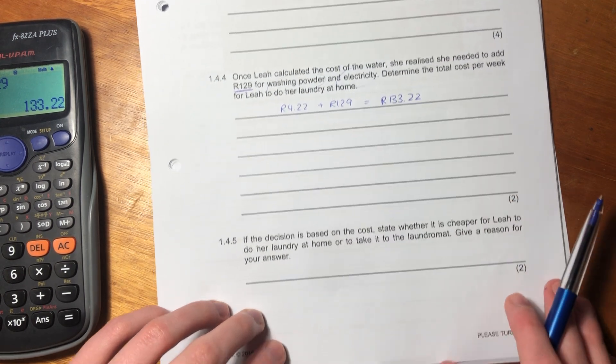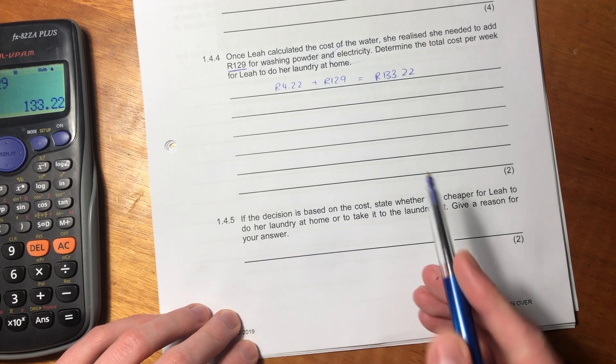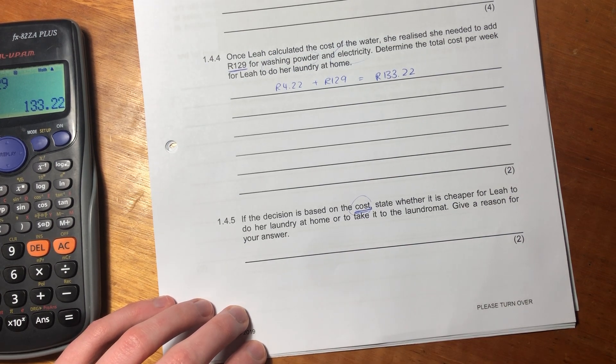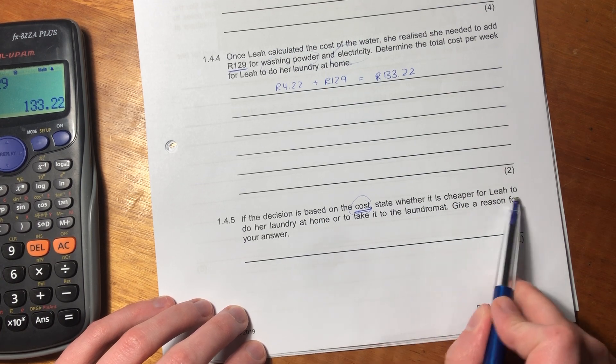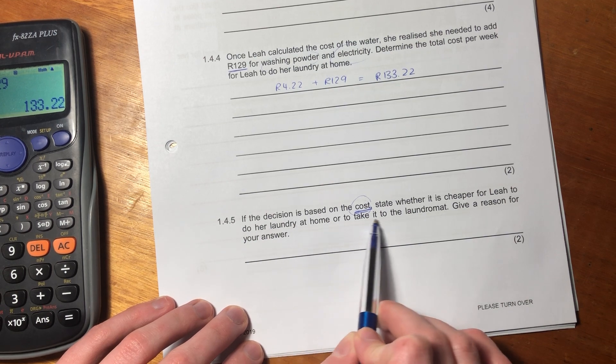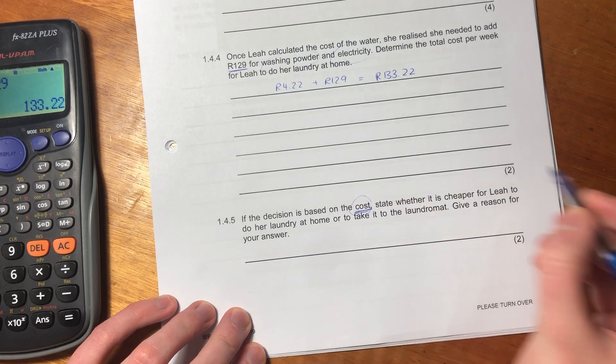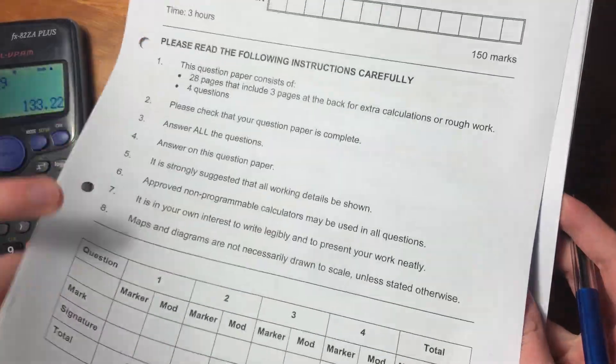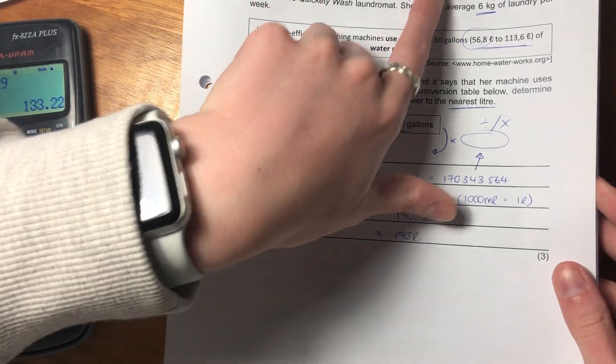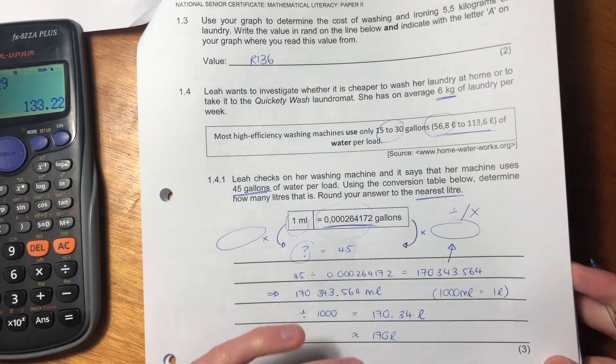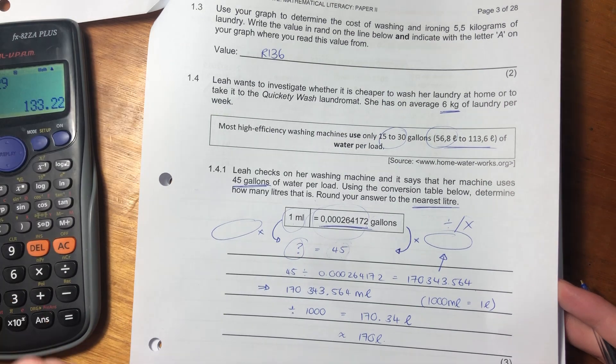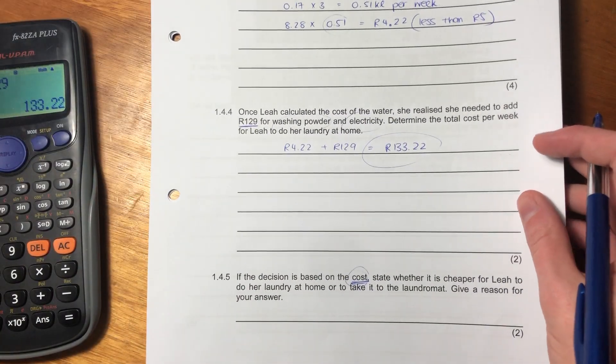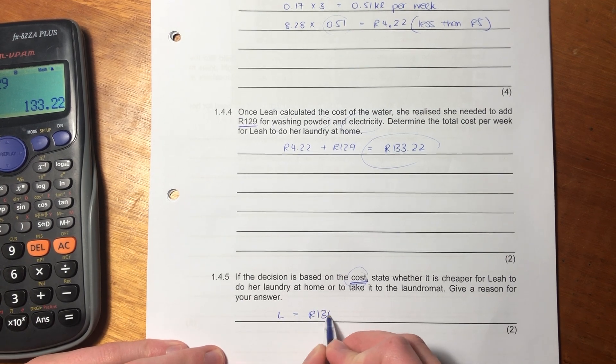It says if the decision is based on cost, and that's important because it could be based on convenience or a lot of things, but here it's saying it's purely on the numbers. State whether it is cheaper for Leah to do her laundry at home or to take it to the laundromat. Give a reason for your answer. Now we know that when she's at home, it's this much. But how much was it when she went to the laundromat? I know that it said 5.5 here, and Leah has 6, but remember that 5.5, you charge the same amount for 6. So she would pay 136 Rand for the laundromat washing. We're comparing 136 Rand, so the laundromat is 136 Rand, and doing it at home is 133 Rand and 22 cents.